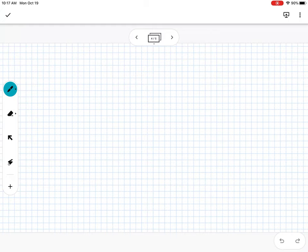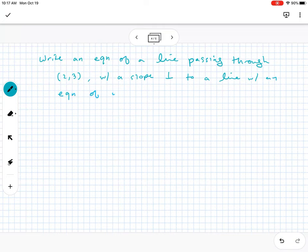One thing I would follow up with now is an example of what they might ask you. Let me pull up a problem. If they say, write an equation of a line passing through 2, 3 with a slope that is perpendicular to a line with an equation of y equals negative 2x plus 2. Here's a classic problem that you'll see.